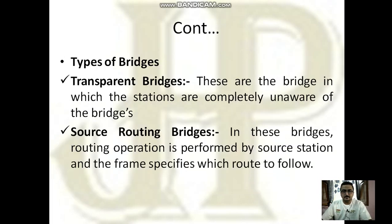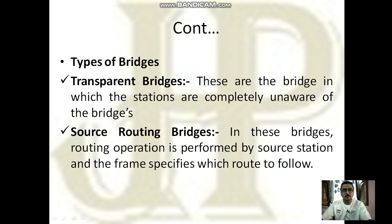There are two types of bridges: transparent bridges and source routing bridges. In transparent bridges, the stations are completely unaware of the bridge, and all networks are treated in the same way. In source routing bridges, the routing operation is performed by the source station and the frame specifies which route to follow. This is the basic difference between transparent bridges and source routing bridges.